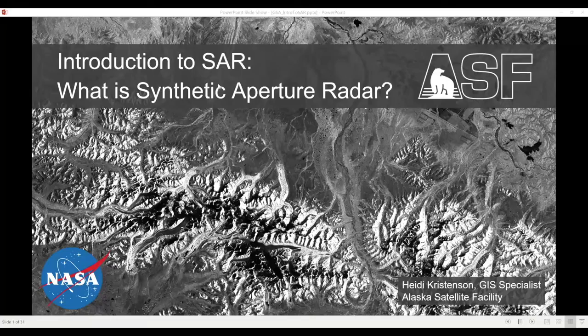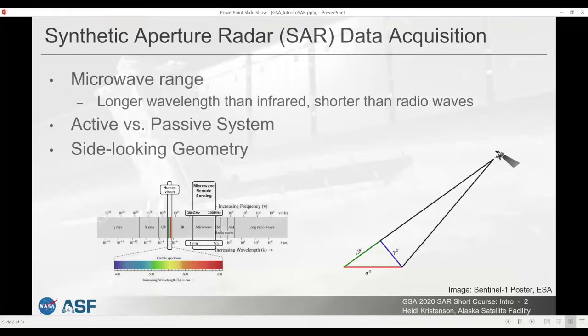I'm going to be going over a really basic introduction to synthetic aperture radar data. A few of the basic concepts of synthetic aperture radar are that they make use of the microwave range of the electromagnetic spectrum. These wavelengths are longer than infrared but shorter than radio waves.